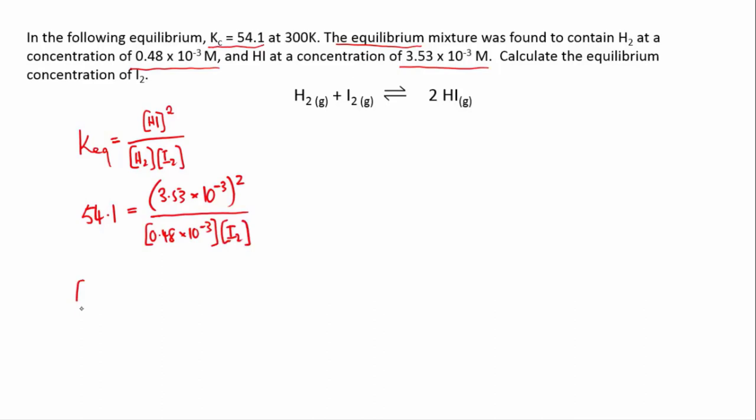If you rearrange this to make iodine the subject you'll get an expression like this, it should be a square bracket. And if you plug that into your calculator you should get 4.8 times 10 to the minus 4 molar.